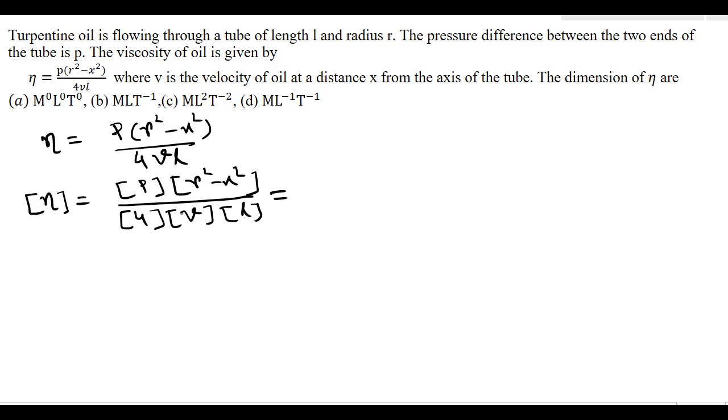The dimension of p, that is pressure, is force divided by area. Force is MLT⁻² divided by area, force per unit area is pressure, divided by L². This is pressure, and r² - x² represents the dimension of length, so this is L².